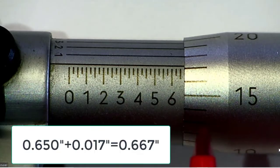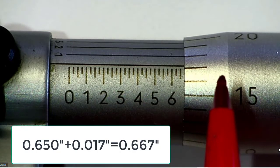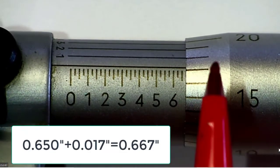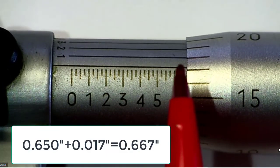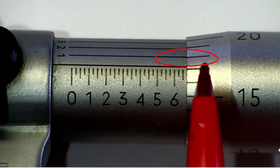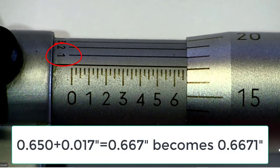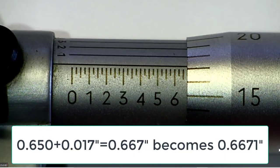When you add those, you get .650 plus .017, that's .667. And as you can see here, the one lines up really, really well, and so our fourth digit is a one, and so this would be 0.6671, and we're done.